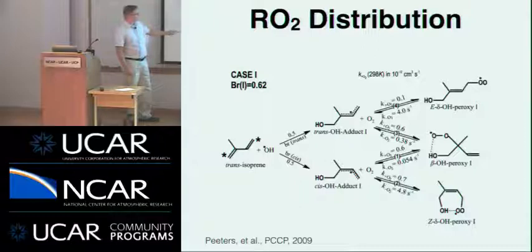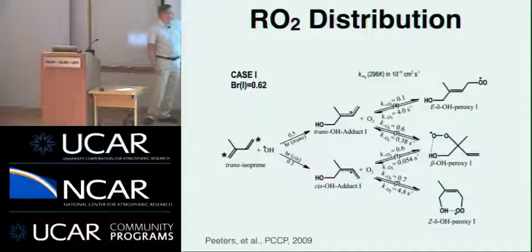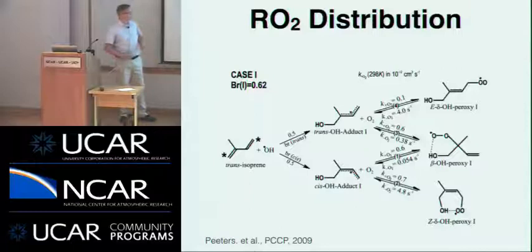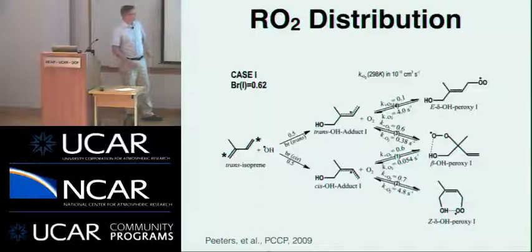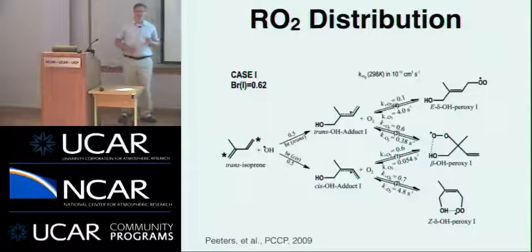Joseph Peters has calculated using ab initio methods that for the 1-OH radical, you get equal distributions of those radicals, and they can add O2 to form a set of three peroxy radicals. A similar picture results when OH adds to carbon 4. Once these peroxy radicals are formed, they can go backwards at rates of order 10 per second if we believe the Benson SAR. You can interconvert between these peroxy radicals on the timescale of their atmospheric lifetime, many times over. So if one of these peroxy radicals has an exceptionally fast sink, you can end up funneling carbon through it.